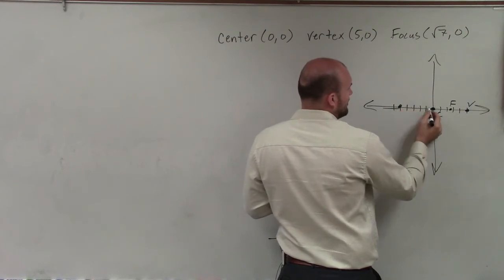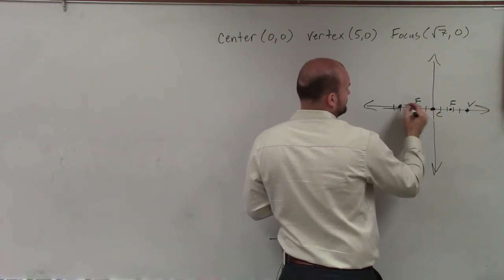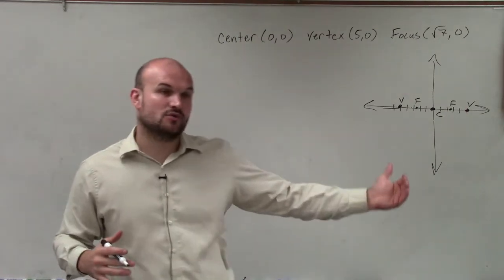1, 2, 3, 4, 5. And then 1, 2, 2.6. So you can see, obviously, we have a major axis horizontal.